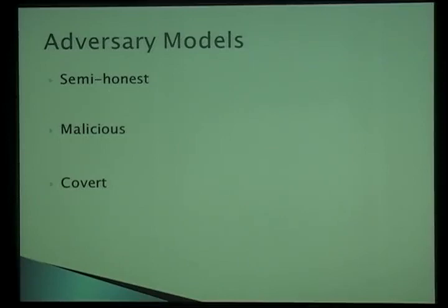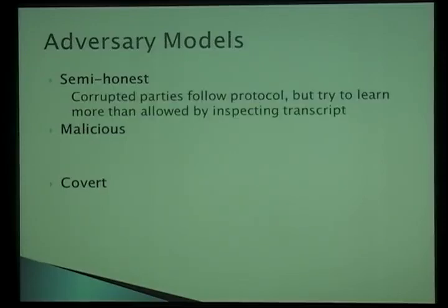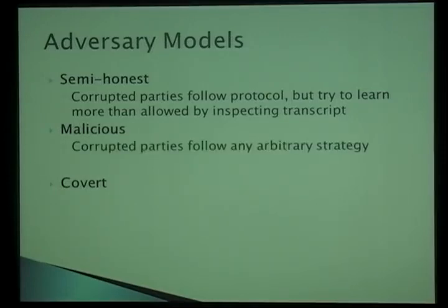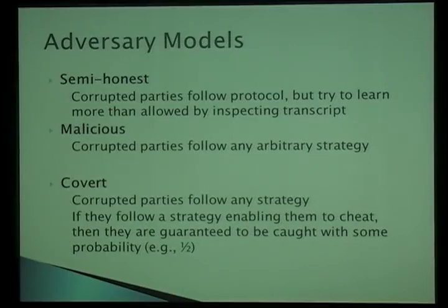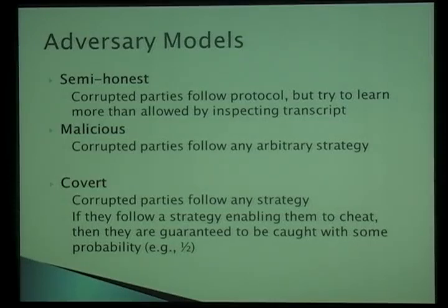Another category to consider is the power of the adversary — not in terms of running time, but in terms of what it can do. The most basic model is semi-honest, where the adversary follows the protocol specification but tries to learn more information by examining the transcript. In the malicious setting, corrupted parties can do anything they want. A more recent model is covert adversaries: corrupted parties can follow any strategy, but if they try to cheat they are guaranteed to be caught with some probability — say one-half, nine-tenths, or 99/100 — a parameter that can be set.